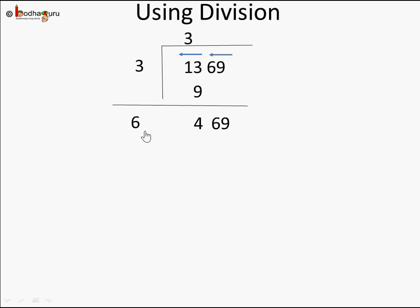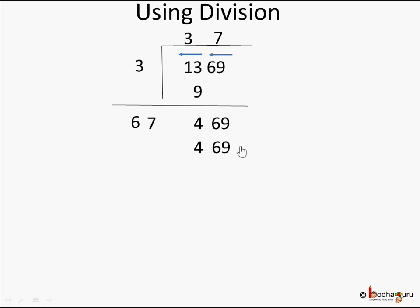Now our goal is to find a digit to place next to 6 such that the same digit appears both in the divisor and is multiplied by the full divisor number. We try: 61×1=61, 62×2=124, 63×3=189, and so on. When we reach 67×7=469, that is exactly our remainder. So the digit is 7.